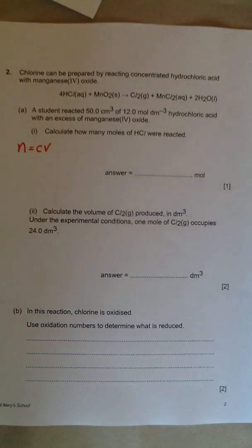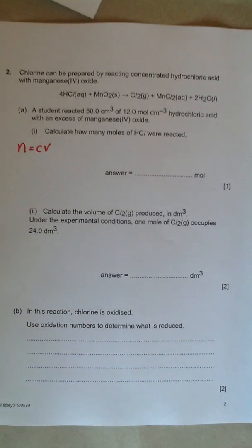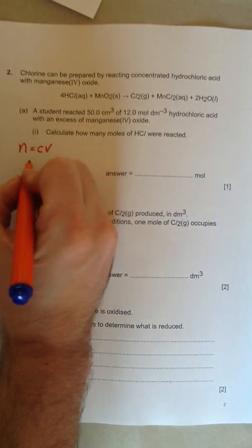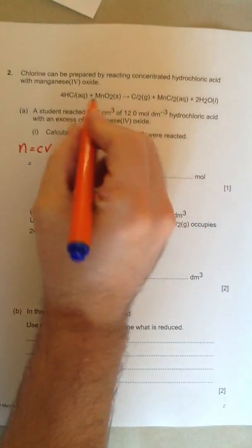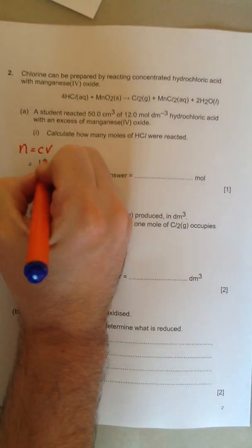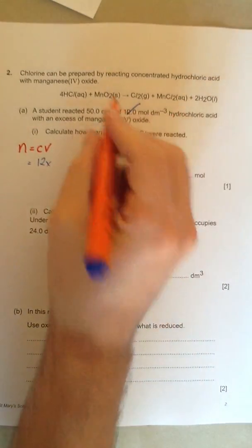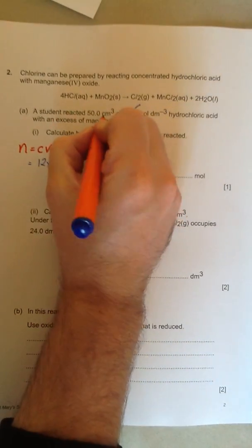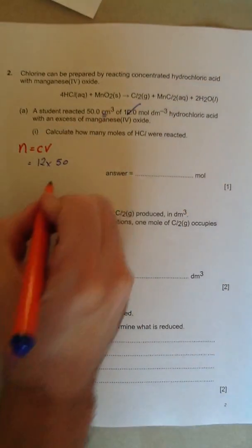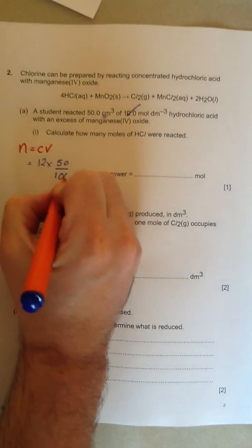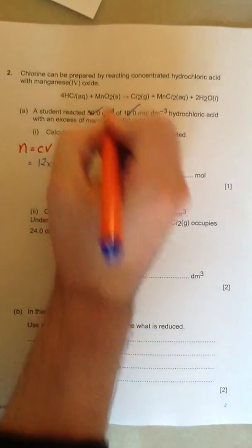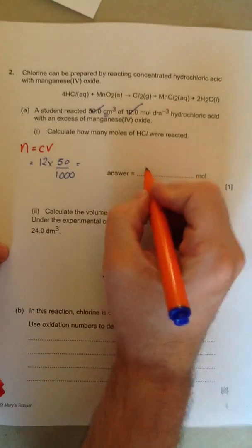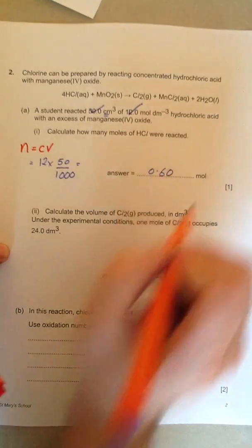Where C is the concentration and V is the volume, but the volume's in decimetres cubed. So we're going to use n equals CV. The concentration is 12. So we've used that. But we need to use the volume, that's 50, but that's in centimetres cubed. So you need to divide that by a thousand. Cross through that, and the number we get is 0.60 moles.